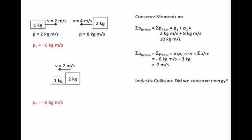This was an inelastic collision. Did we conserve kinetic energy? We always conserve energy, but did we conserve kinetic energy? The 1 kilogram mass had 2 joules and the 2 kilogram mass had 16 joules, for 18 joules total. Our final combined mass only had 6 joules of energy. We've lost 12 joules to heat in the collision — just like a nail gets hot when you hammer it in.